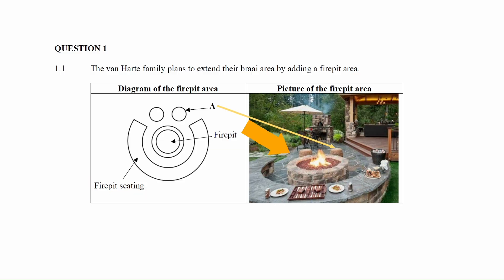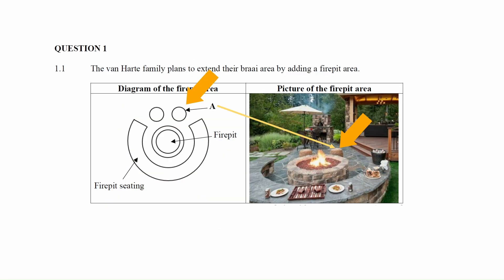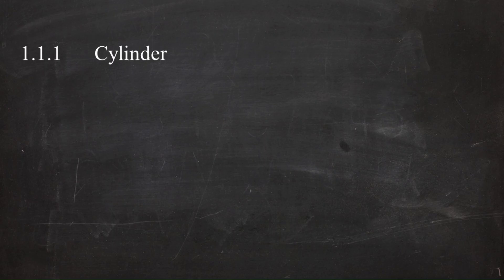The fire pit is in the shape of a cylinder. In question 1.1.1 you have to identify the three-dimensional shape indicated by the letter A in the picture and diagram of the fire pit area. From the picture, A refers to the cylindrical seat next to the fire pit. The key word is three-dimensional, not two-dimensional. For this reason we have to state that A is a cylinder. If you said A is a circle, you will be given only one out of the two marks because a circle is a two-dimensional shape.